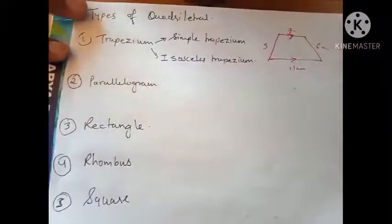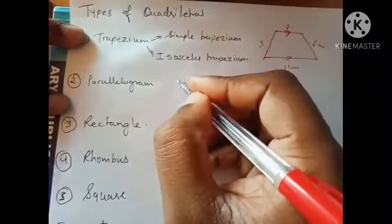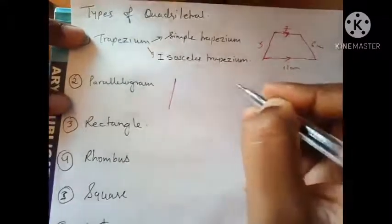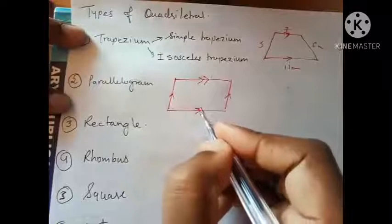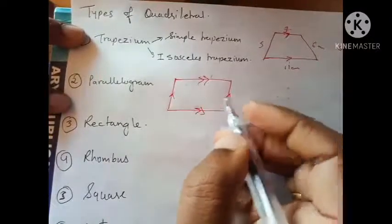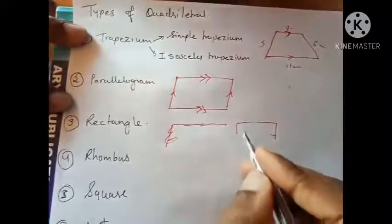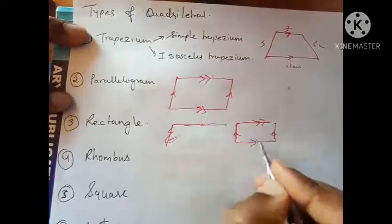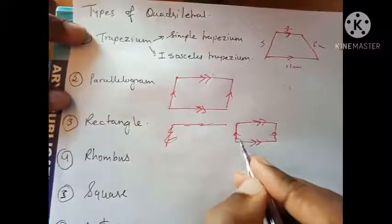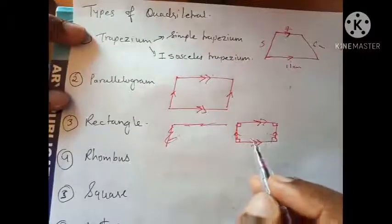A parallelogram is a closed quadrilateral in which opposite sides are parallel to each other — this side is parallel to this, and this side is parallel to this. The opposite sides are also equal. A rectangle is also a parallelogram because its opposite sides are equal and parallel, but the angles of a rectangle are all 90°.